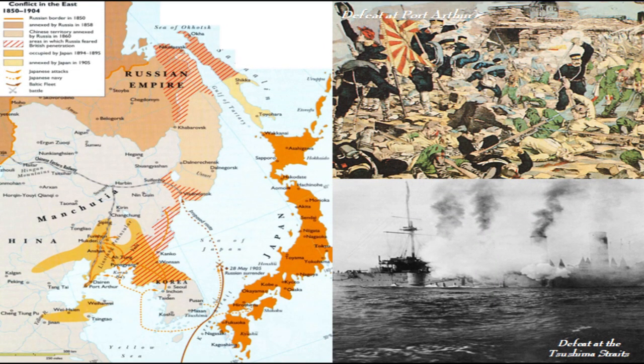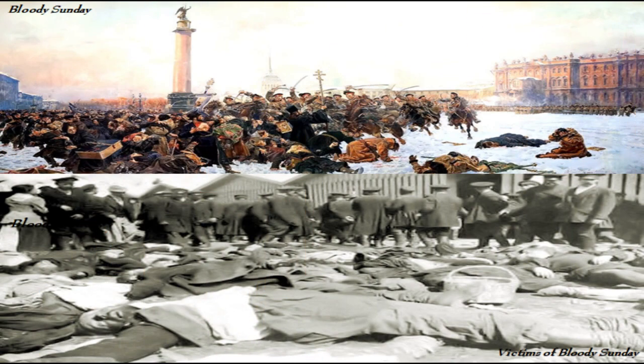In 1904, Russia was attacked by Japan in a surprise attack, and after defeats on land in Korea, Manchuria, and at the siege of Port Arthur, and the destruction of both the Russian Far East and Baltic fleets in two battles in the Tsushima Strait, Russia was humiliated and forced to give up Korea and Manchuria. This decisive defeat suggested the end of the Tsarist state was near.